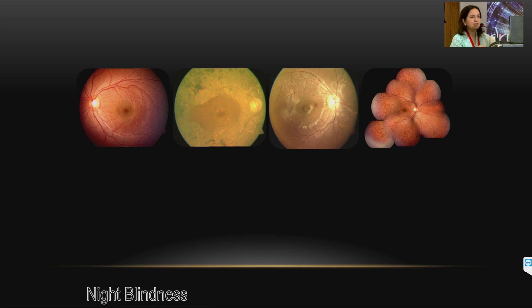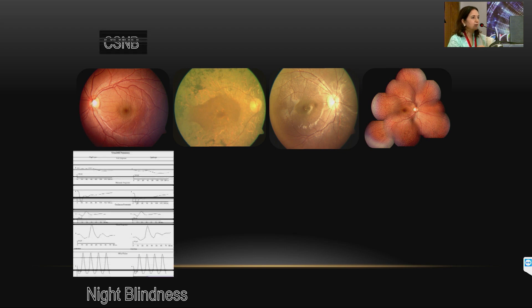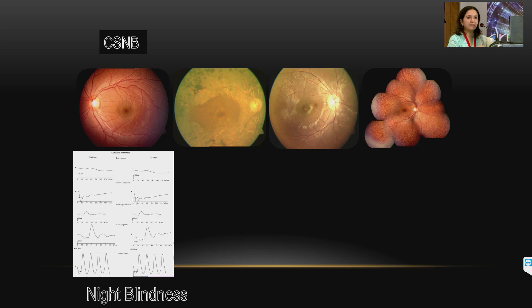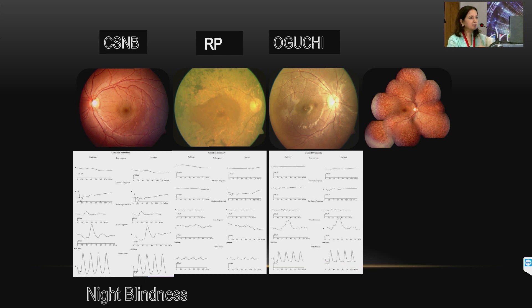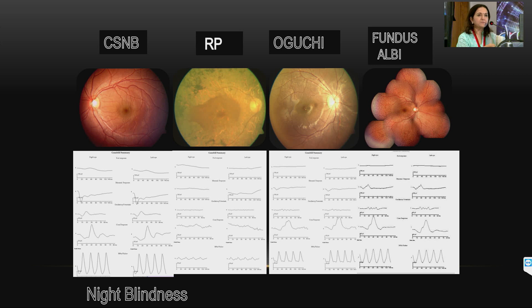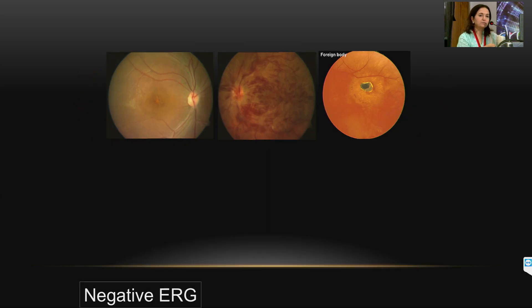The most common symptom is night blindness. With a normal fundus and a negative ERG waveform, the diagnosis is congenital stationary night blindness. With bony spicule pigmentation and a flat ERG, you can diagnose retinitis pigmentosa. With a tapetal reflex and negative ERG on combined response, diagnose Oguchi disease. With white spots and a reduced response that becomes better on prolonged adaptation, consider fundus albipunctatus.